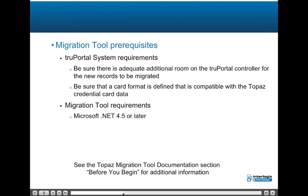Person and credential data may be migrated from Topaz 1.4.0 or 1.72.0 to TruePortal 1.72. The Migration Tool requires additional space on the TruePortal controller for new records to be migrated, and a card format must be defined that is compatible with the Topaz credential card data. The Migration Tool requires that Microsoft .NET 4.5 or later be installed on the PC. See the Topaz Migration Tool documentation for additional information.